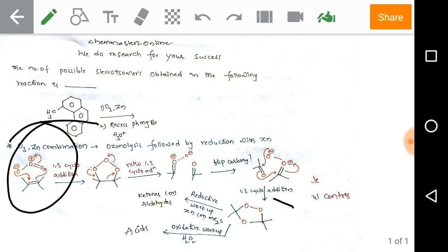After that, flip of carbonyl takes place and in the next step, 1,3-cycloaddition takes place. Just follow the arrows. After that, if we use reductive workup, for example zinc or dimethyl sulfide, we get ketones or aldehydes. If we work up with oxidative reagents like H2O2, we get carboxylic acids in the products.